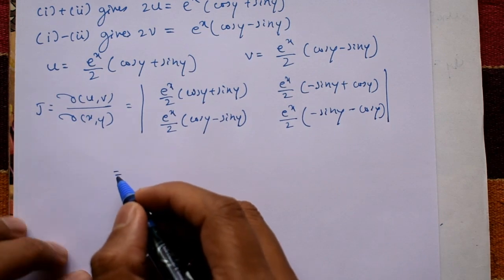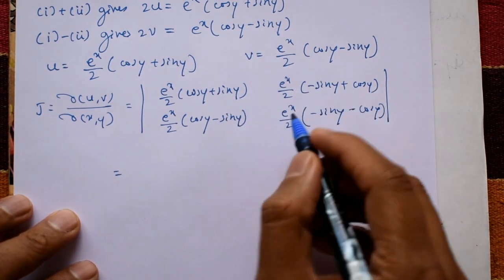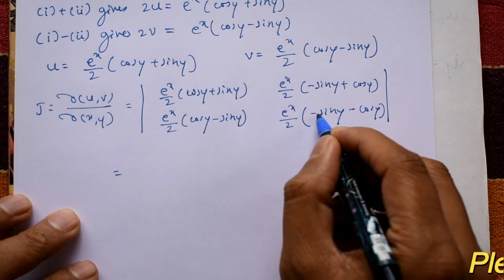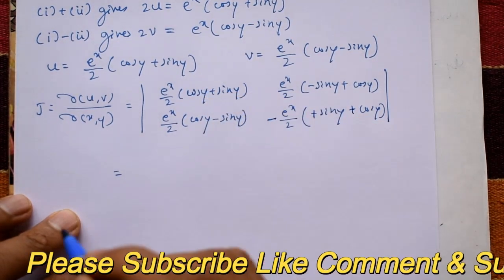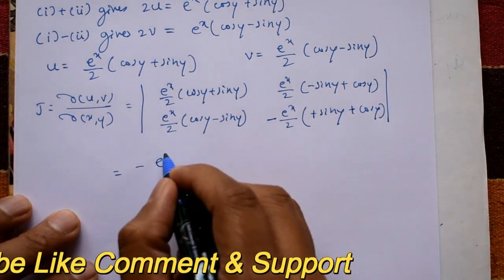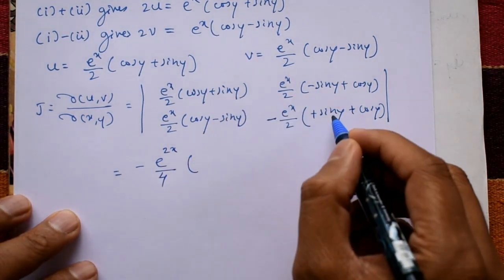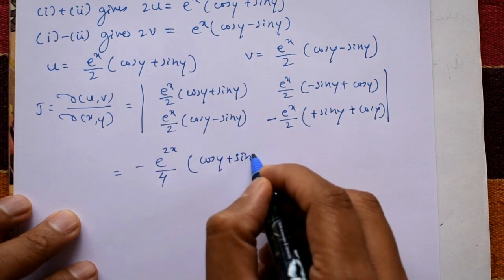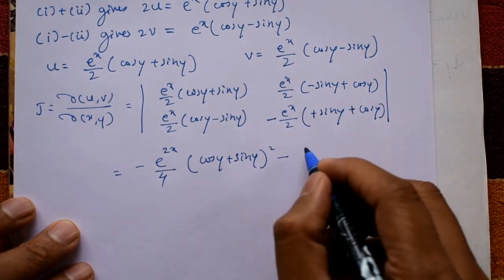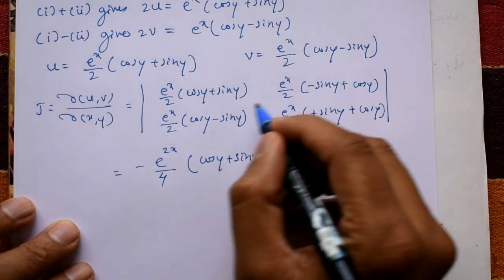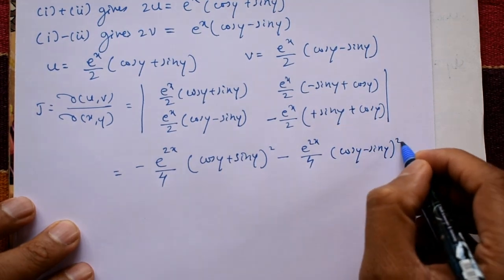Now expand the determinant. Multiplying (e raised to x by 2) times (e raised to x by 2) gives e raised to 2x by 4. The first term gives (e raised to 2x by 4)(cos y plus sin y) whole square, and we subtract (e raised to 2x by 4)(cos y minus sin y) whole square.